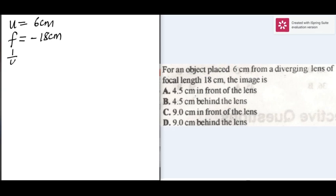The lens equation: 1 over u plus 1 over v equals 1 over the focal length.